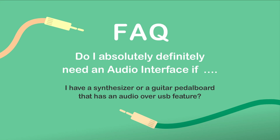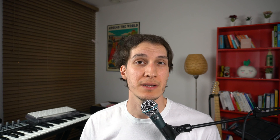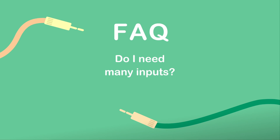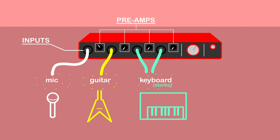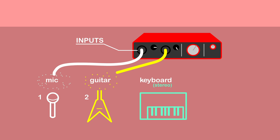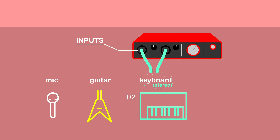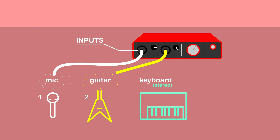If you have a synthesizer or a guitar pedal board that has an audio over USB feature? Basically that means it has an audio interface built in, so no, you don't need one. Do you need many inputs? Well, are you planning on recording many channels simultaneously? Then yes, definitely. Another reason to consider having a lot of inputs is having everything always hooked up to your system with preamps and levels set up accordingly, so that when you want to record or play, you don't need to connect or adjust anything — everything has its own dedicated channel, its own settings, and is always ready to record. On the other hand, if you're only recording a few things at a time, you might find that even two channels are more than enough. From my experience, the more inputs, the more flexibility, expandability, and faster workflow, especially when you're in the zone creatively.